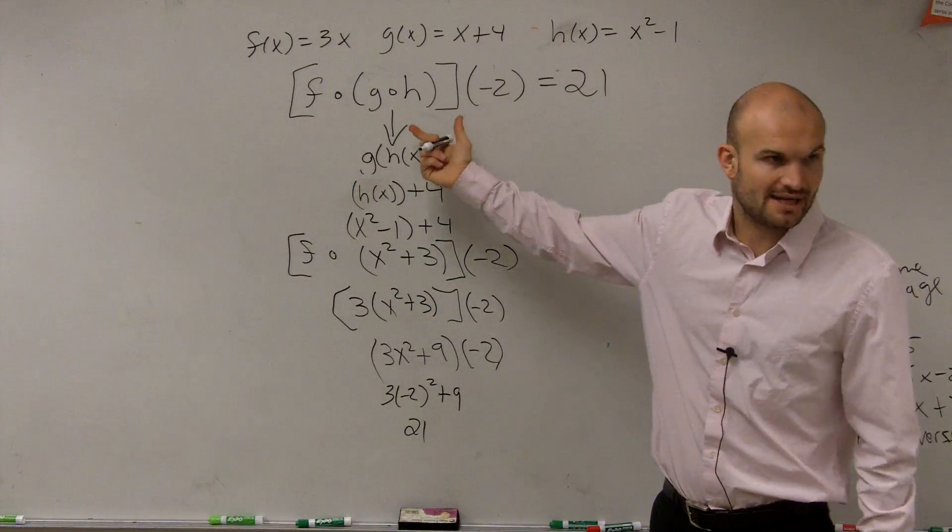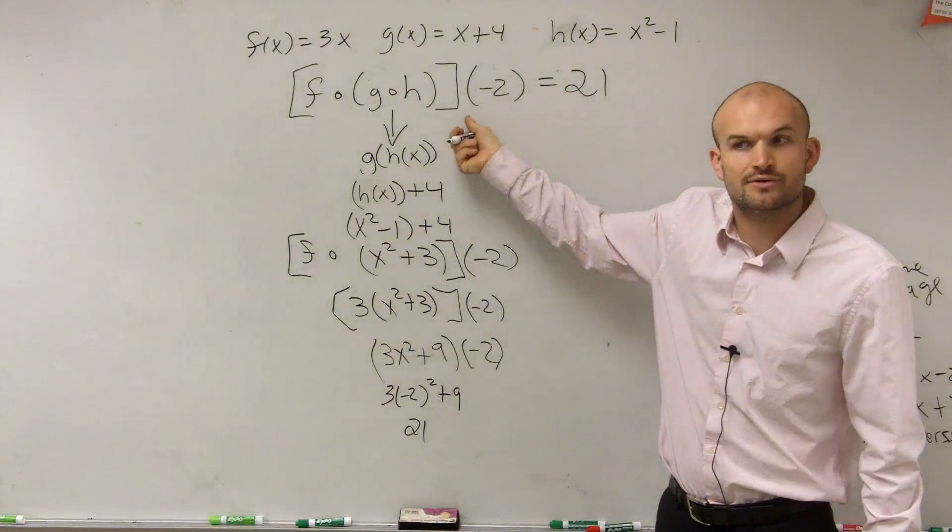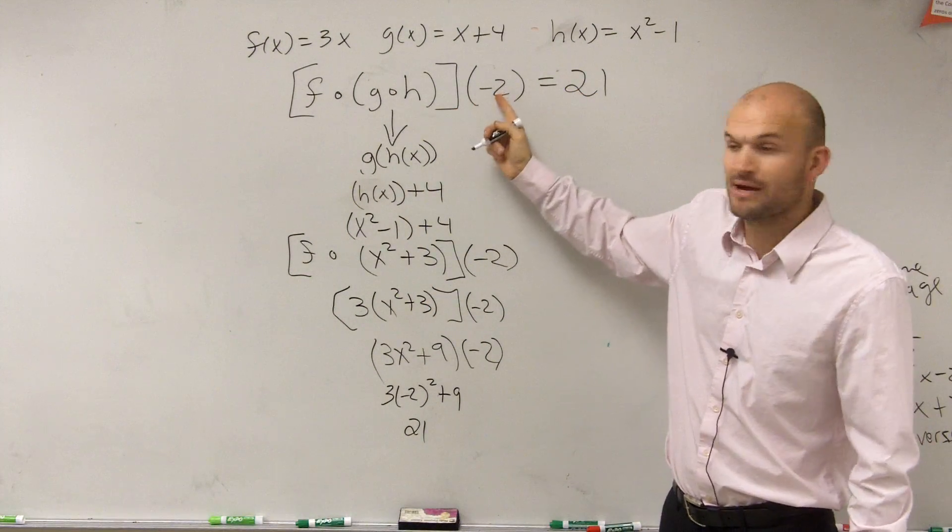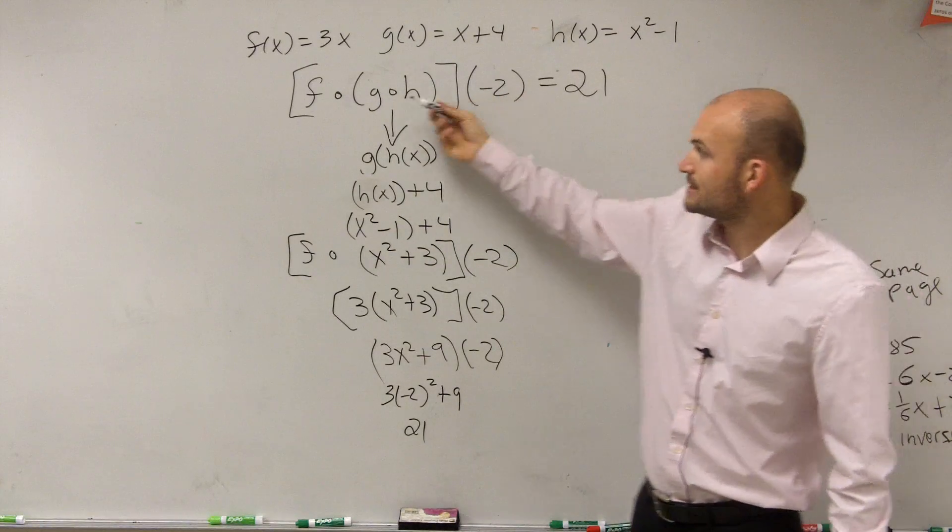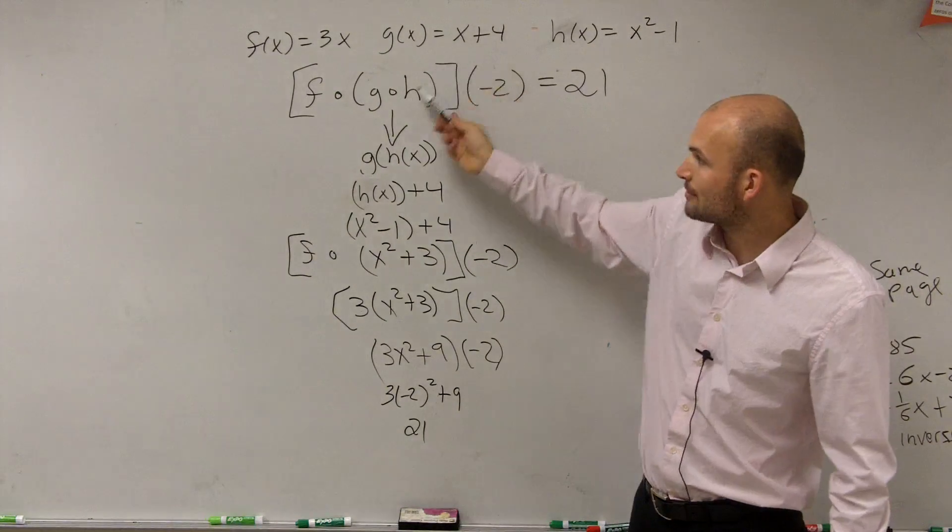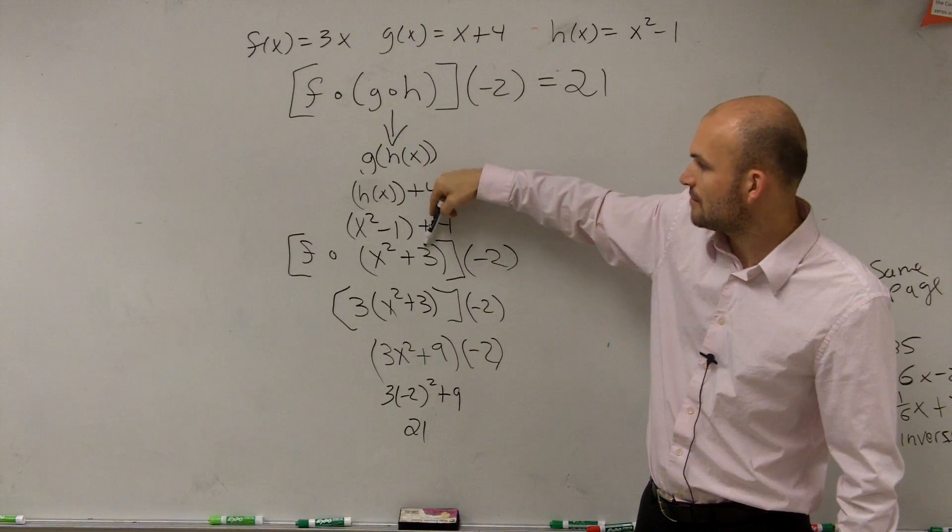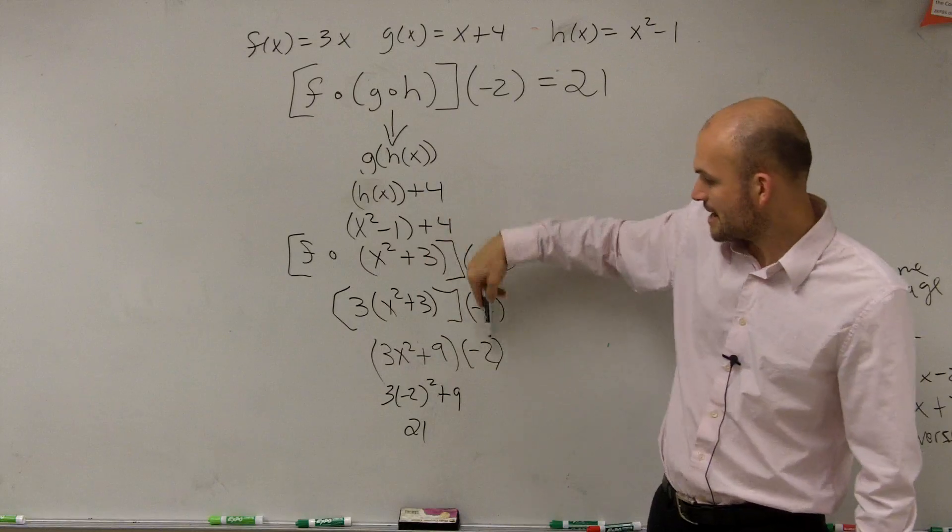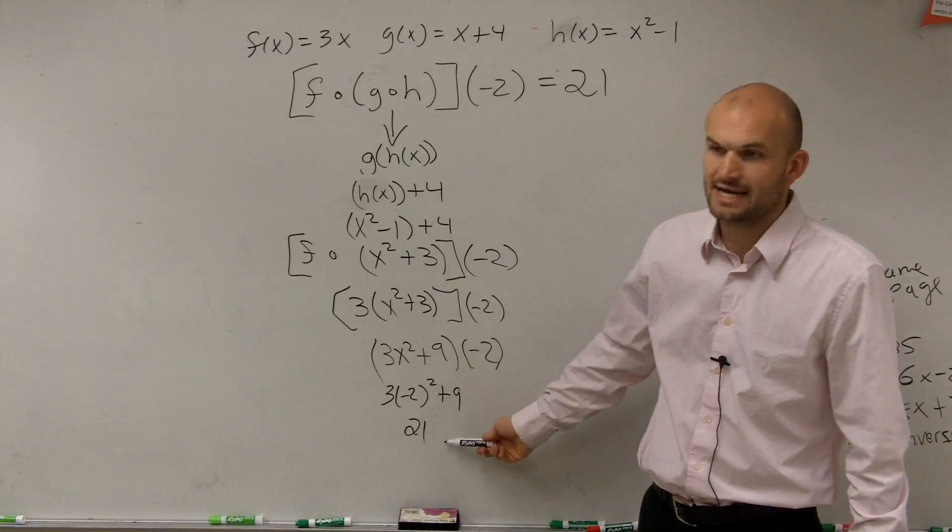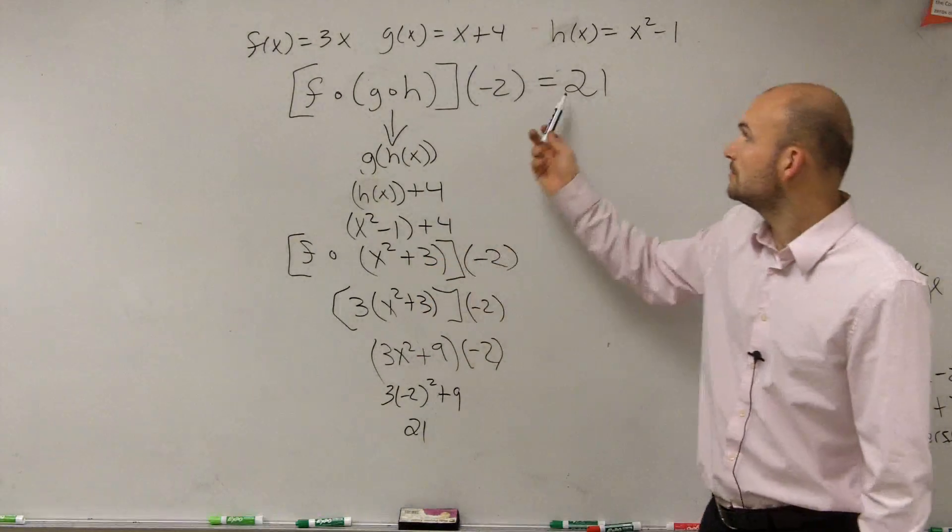Remember, this is not multiplying. You're evaluating for negative 2, right? You're not multiplying by negative 2. You're evaluating for negative 2. So what I did is I did the innermost parentheses first. I plugged h into g and got this. Then I plugged this into f and got this. Then I plugged this into that and got 21, which is my answer.